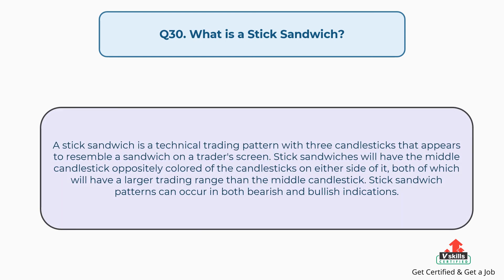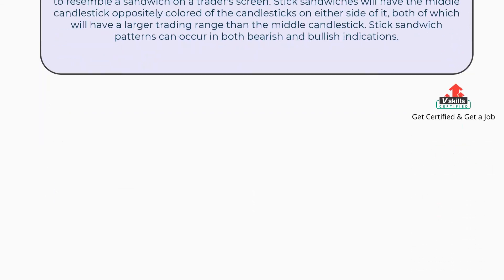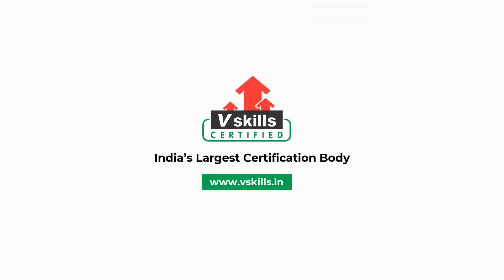Question number 30: What is a stick sandwich? A stick sandwich is a technical trading pattern with three candlesticks that appears to resemble a sandwich on a trader's screen. Stick sandwiches will have the middle candlestick oppositely colored of the candlesticks on either side of it, both of which will have a larger trading range than the middle candlestick. Stick sandwich patterns can occur in both bearish and bullish indications. For more such videos, subscribe to our channel.